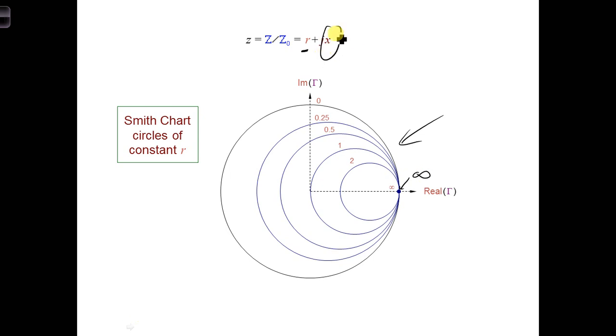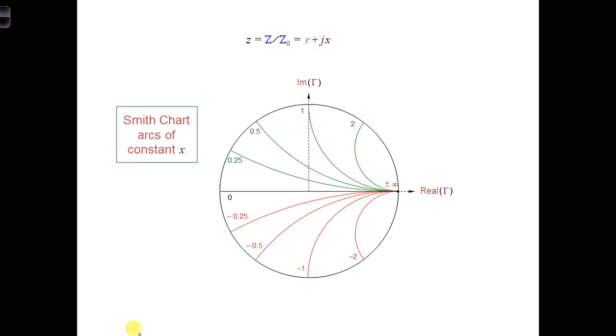Next we have the imaginary part, lowercase x. The imaginary part, arcs of constant x, of the normalized load impedance. These are represented by arcs on the Smith chart. The red arcs are capacitive, so these are negative reactances.